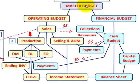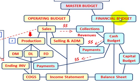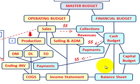Looking at our diagram here for budgets, we start out with our master budget, and then under our master budget we have the operating budget or the financial budget. For our financial budget, just as a point of interest, it includes our cash budget, our capital budget, and also the balance sheet budget. But for our production budget, that falls under the operating budget.